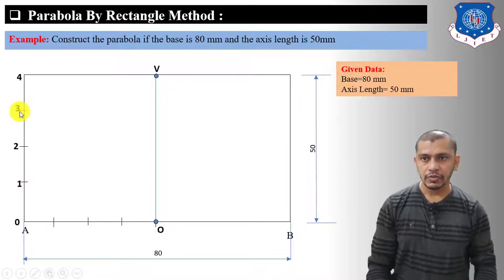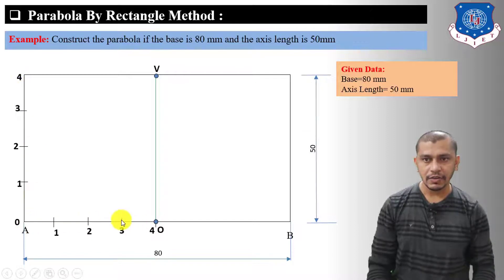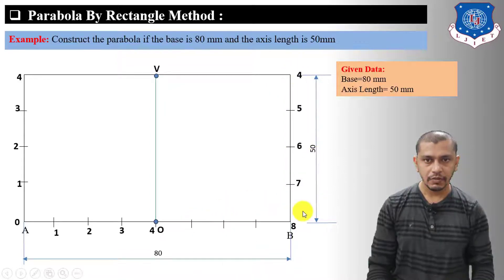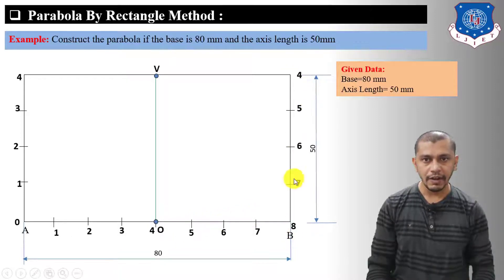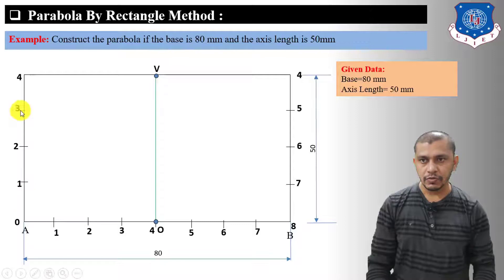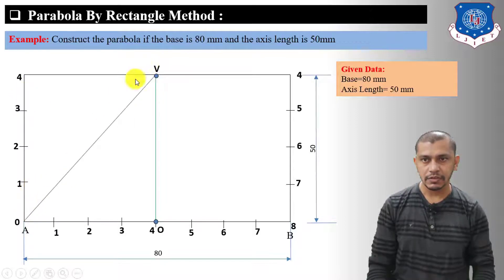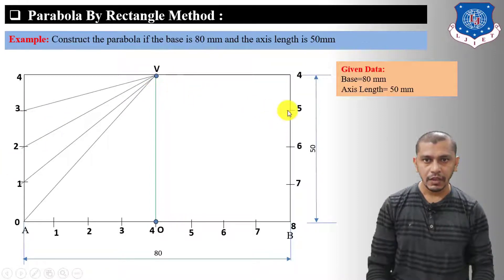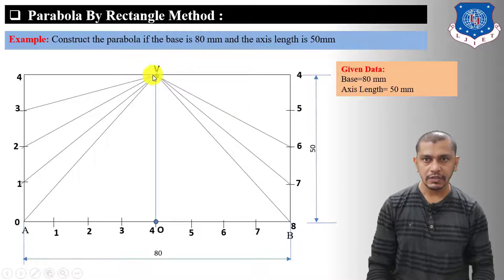Number the divisions 0, 1, 2, 3, 4 on both sides. After dividing the lengths into four equal divisions on each side, connect these points — 0, 1, 2, 3, 4 — to vertex V. Also connect points 5, 6, 7, 8 to V on the other side.